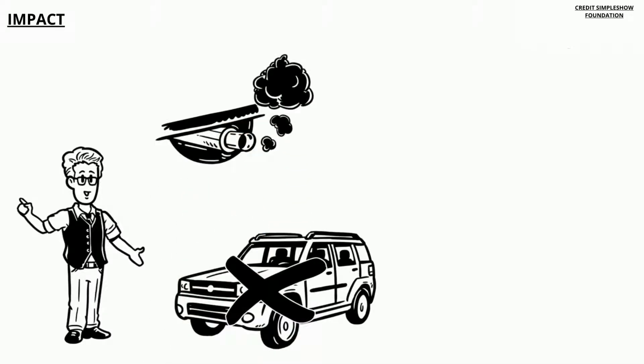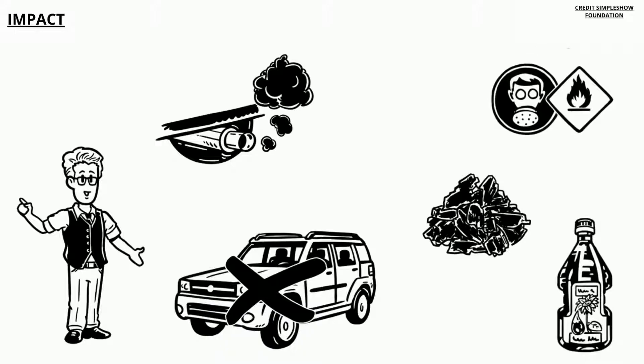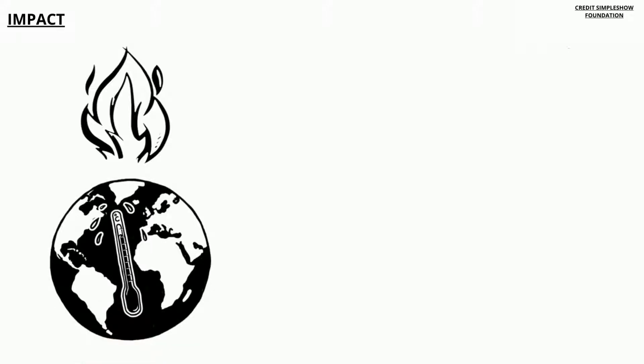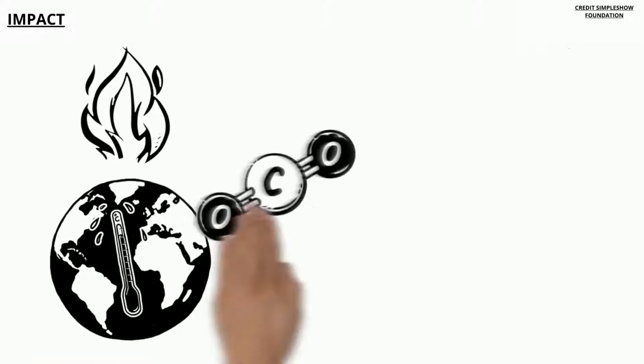He further explains that greenhouse gases are primarily emitted by burning fossil fuels like coal, oil, and natural gases. Greenhouse gases trap heat in the atmosphere and make the planet hotter. In fact, they are formed in many ways.